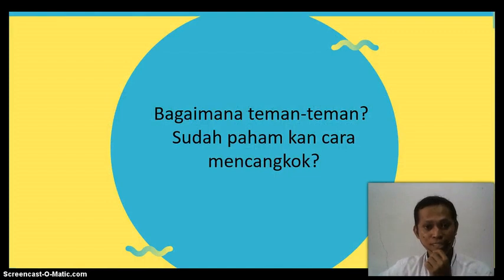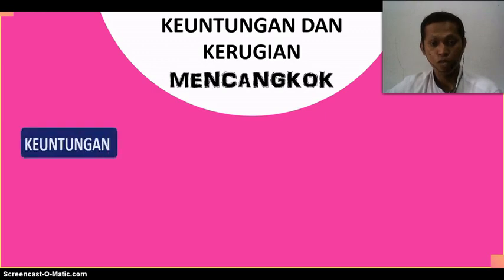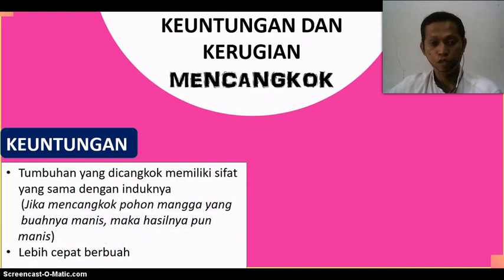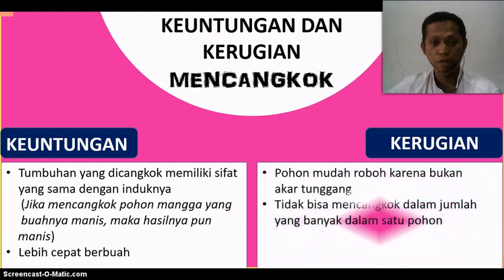Bagaimana? Sudah paham kan caranya? Sekarang kita akan membahas keuntungan dan kerugian mencangkok. Keuntungannya adalah tumbuhan yang dicangkok memiliki sifat yang sama dengan induknya — jika mencangkok pohon mangga yang buahnya manis, maka hasilnya pun manis — dan lebih cepat berbuah. Sedangkan kerugiannya, pohon mudah roboh karena bukan akar tunggang, dan kita tidak bisa mencangkok dalam jumlah yang banyak dalam satu pohon.